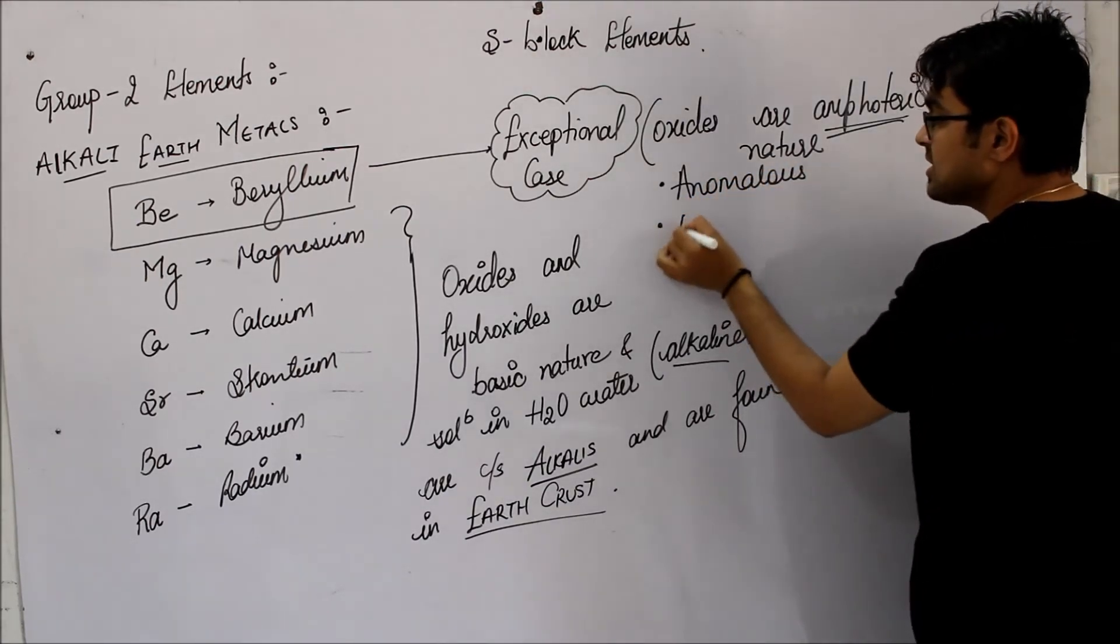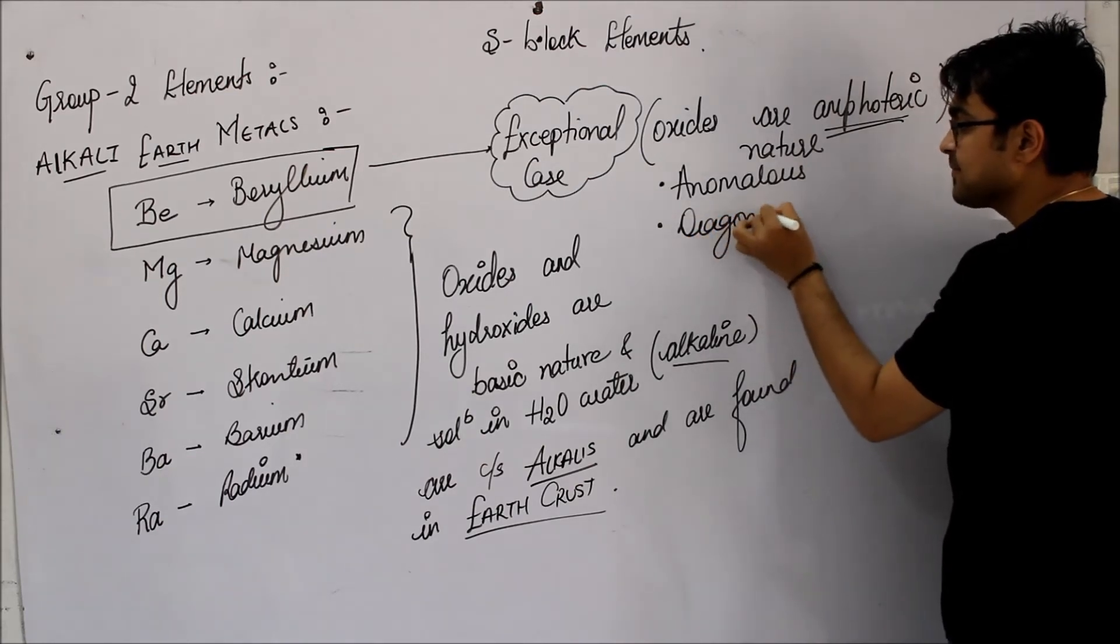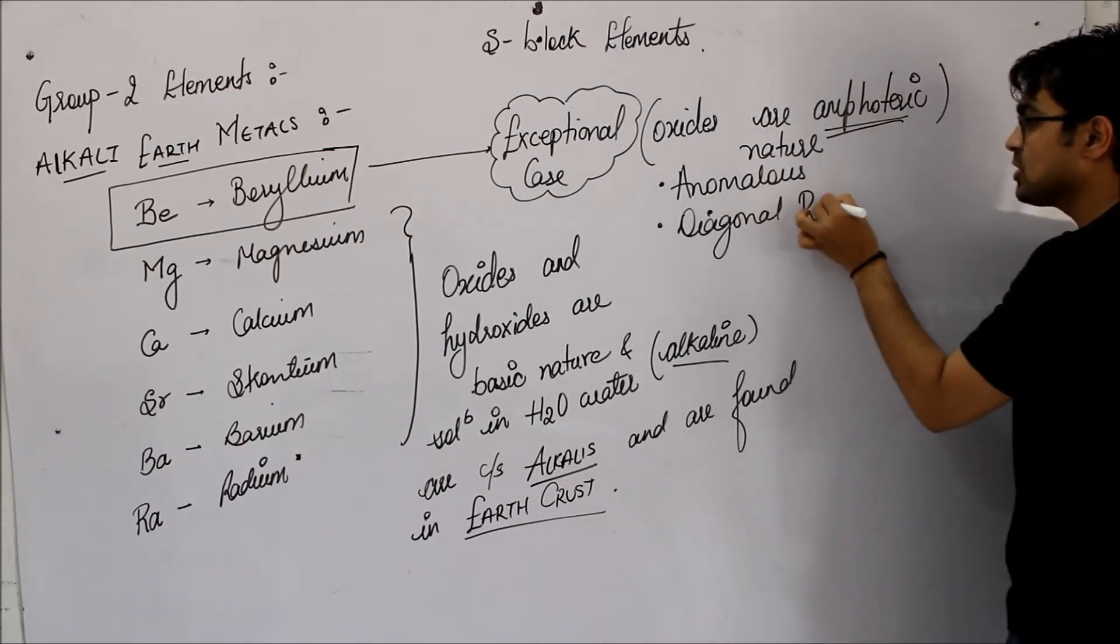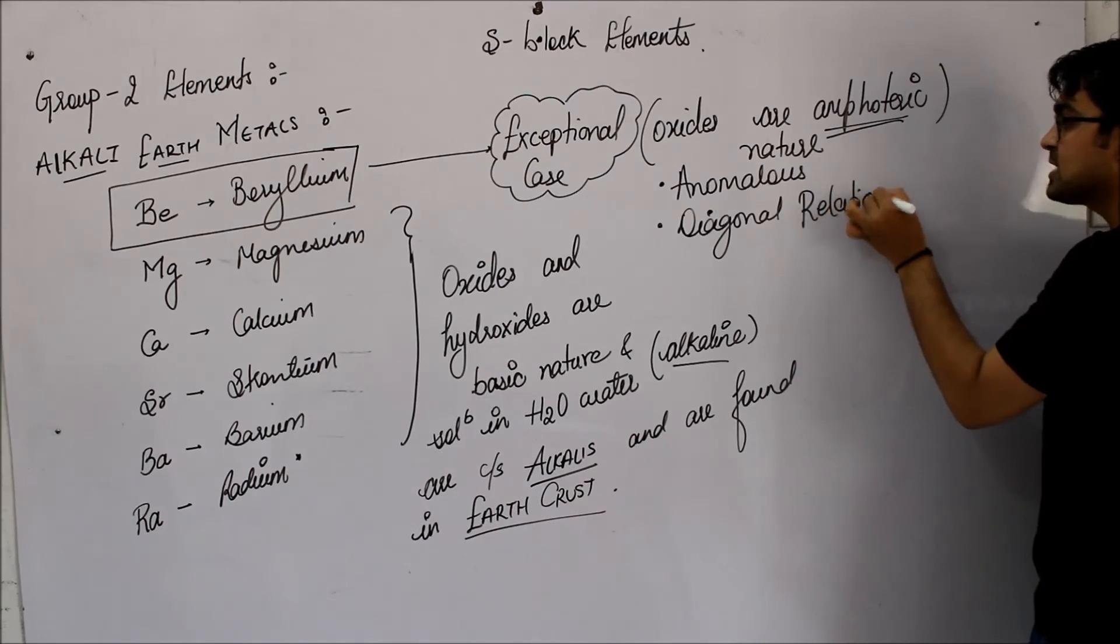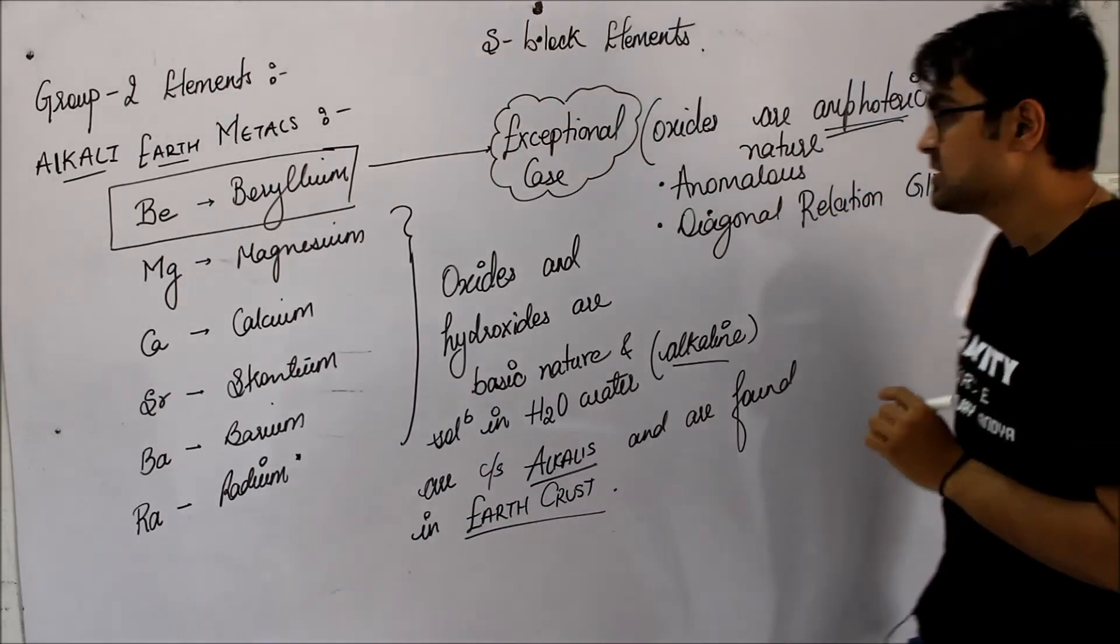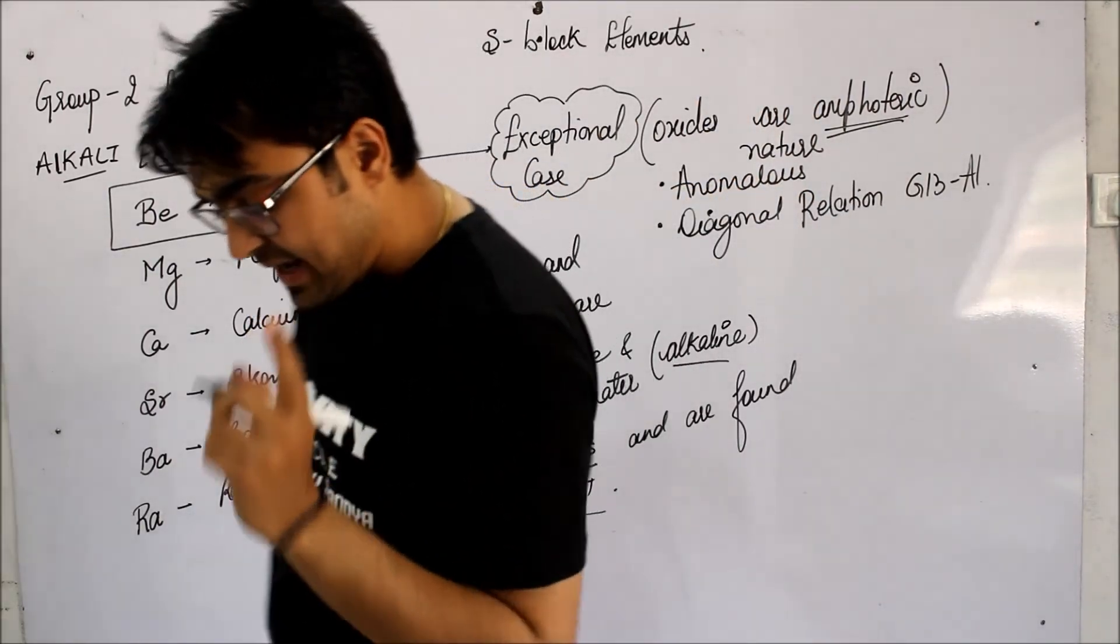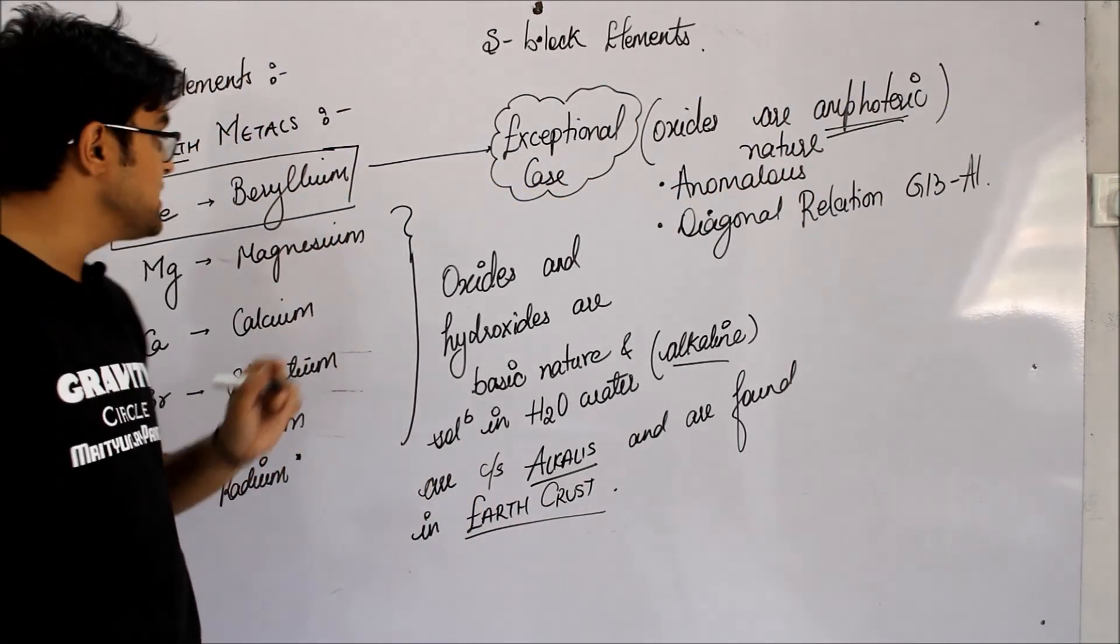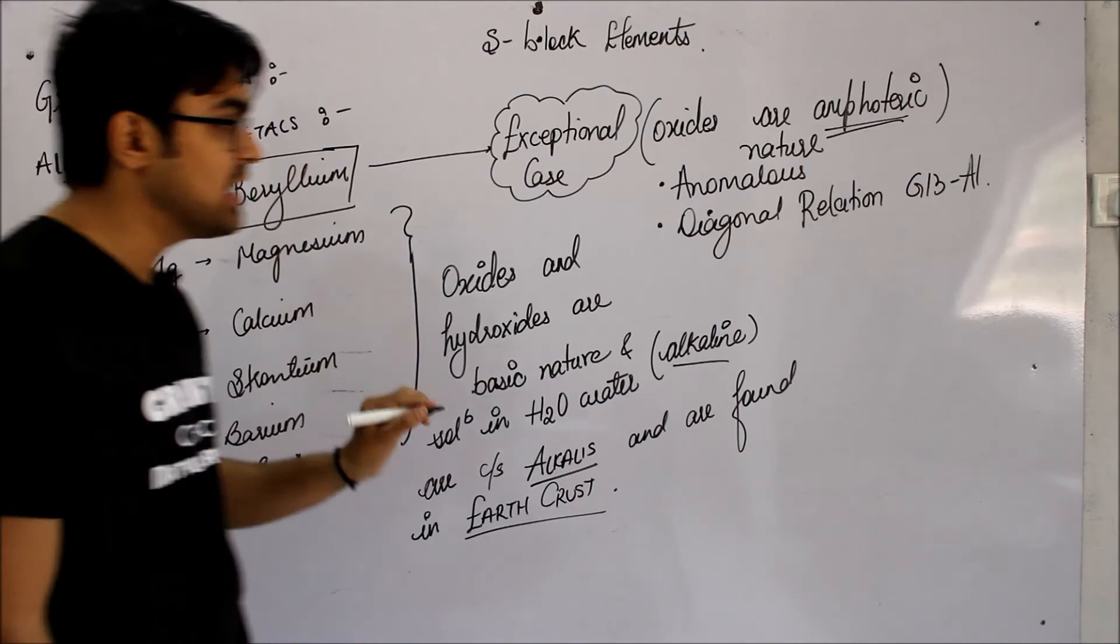And secondly, it will have a diagonal relationship. It will show diagonal relationship with Group 13's second member, aluminum. Beryllium will show diagonal relationship with aluminum. So it is different in every aspect.